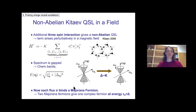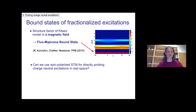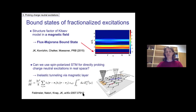You can never see fractionalized excitations in isolation because they always have to be created in pairs. Nevertheless, a few years back we looked at the neutron scattering response and, although everything is very broad in momentum, in frequency you can actually get a sharp response — for example from this flux-Majorana bound state in this non-Abelian spin liquid phase. We were also thinking of whether we can do something equivalent to what has been so successful in the area of topological insulators, where you can directly probe the bulk-boundary correspondence in real space — something for charge-neutral excitations like the ones we have here.